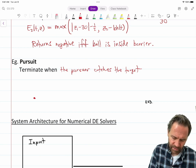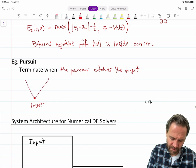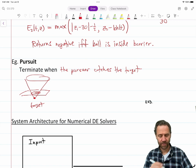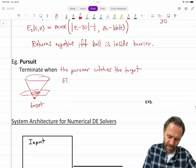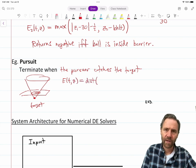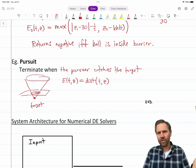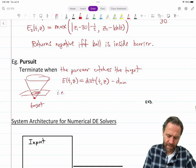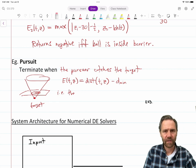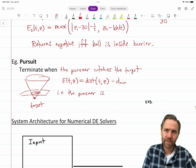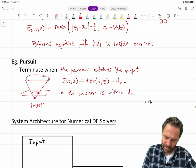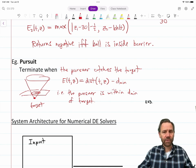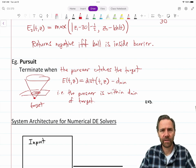Let's look at the pursuit model. We want to terminate the pursuit model when the pursuer catches the target. We'll say there's some radius of effect, D-min. As long as the pursuer is within a minimum distance D-min of that target, we'll say it's been captured. We want a cone that goes down and passes through 0 at this ring of radius D-min, then goes negative inside. So that event function equals the distance from the pursuer to the target minus D-min. The pursuer is within D-min of target.